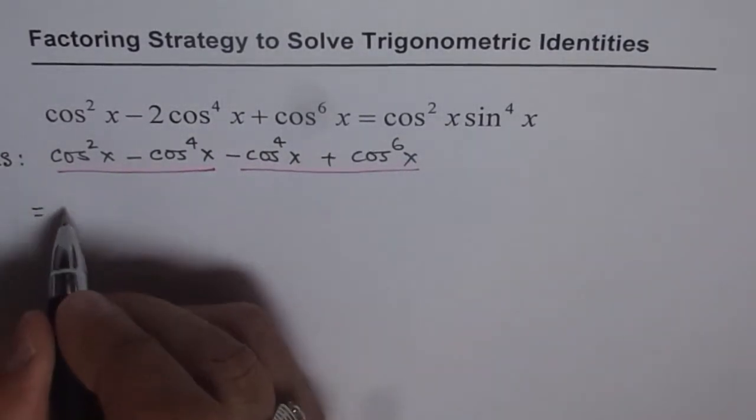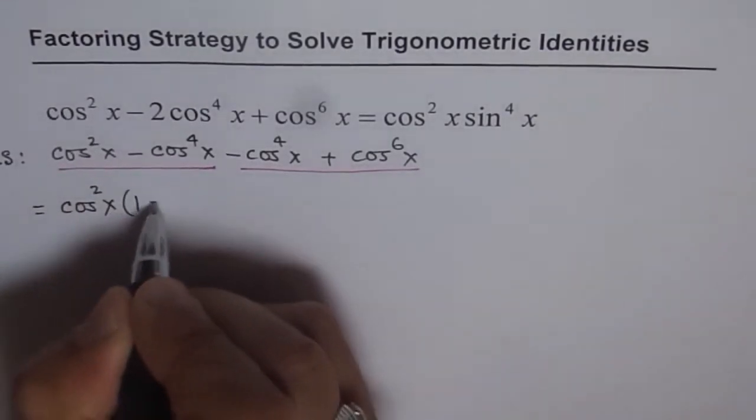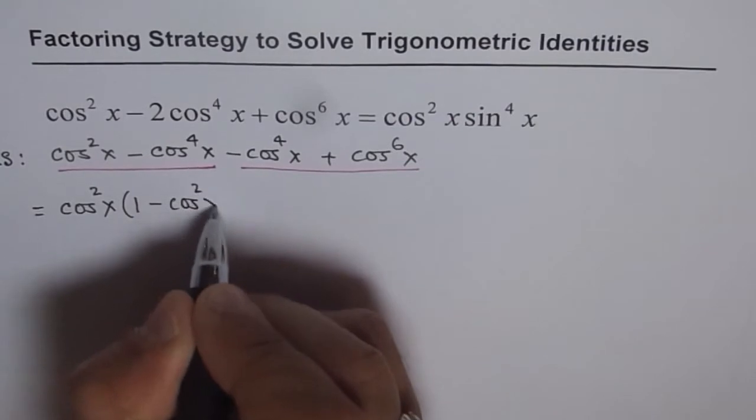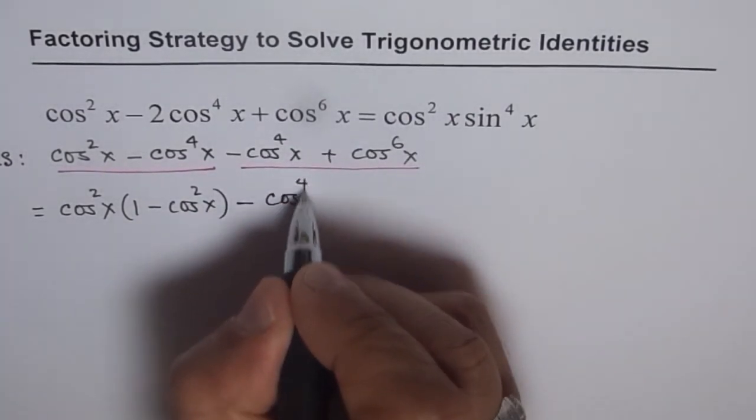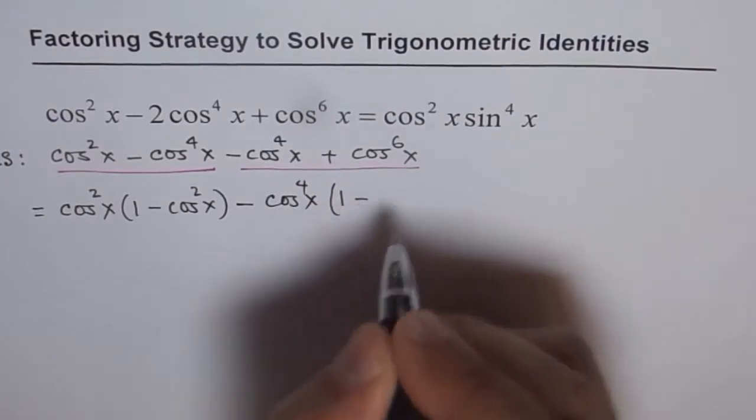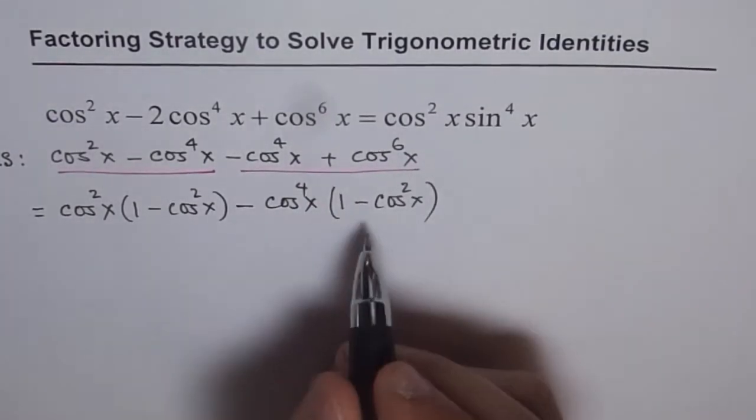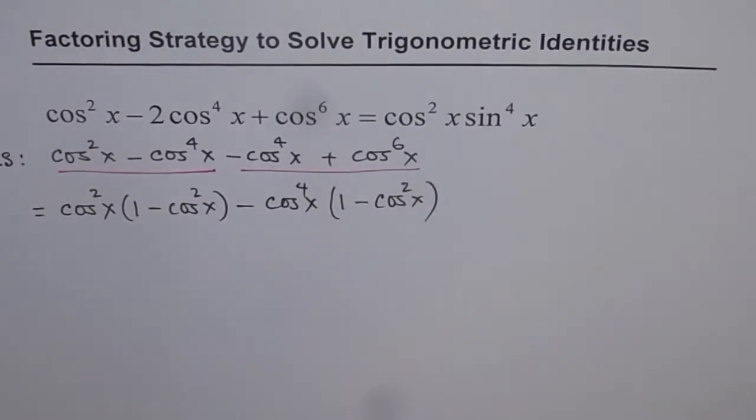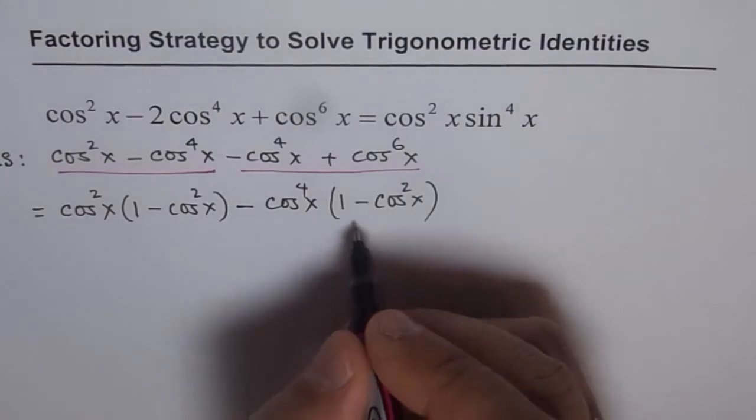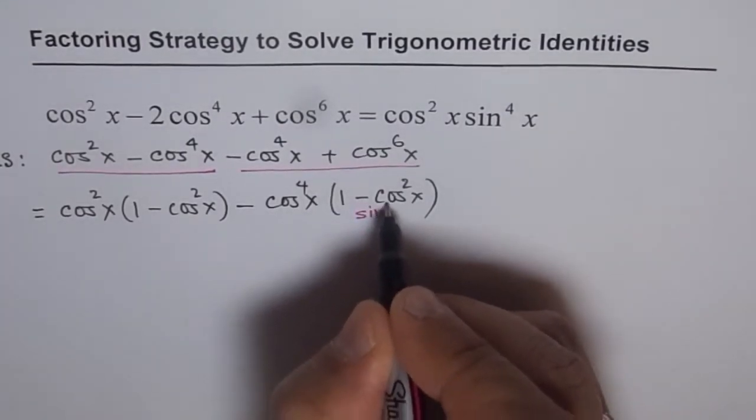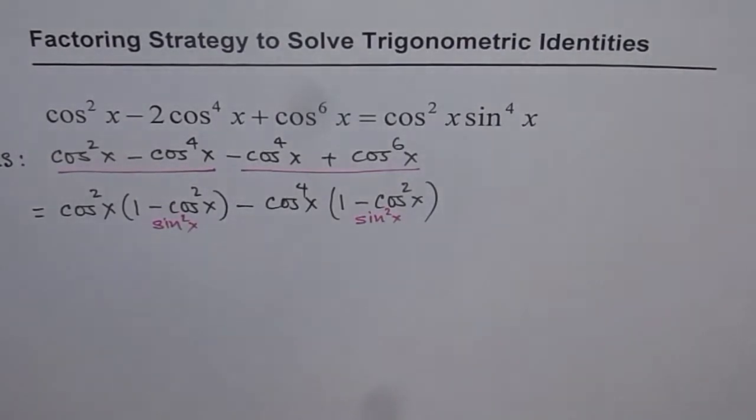We can factor cos²x from the first two terms: cos²x(1 - cos²x). From the last two terms, we can factor cos⁴x: cos⁴x(1 - cos²x). Now, 1 - cos²x is sin²x. And that is also a common factor, so this can be replaced as sin²x, and we can factor it.